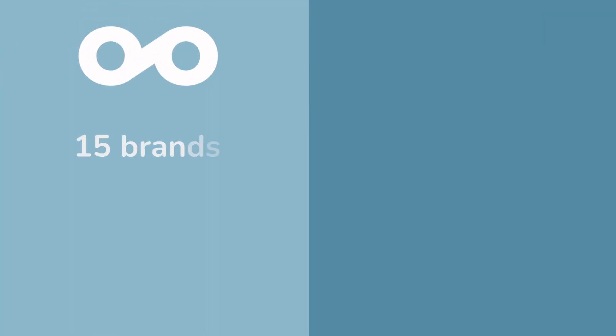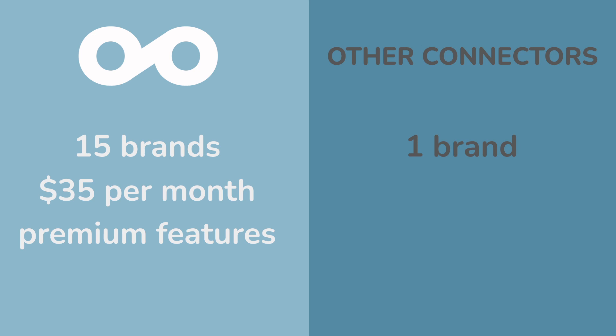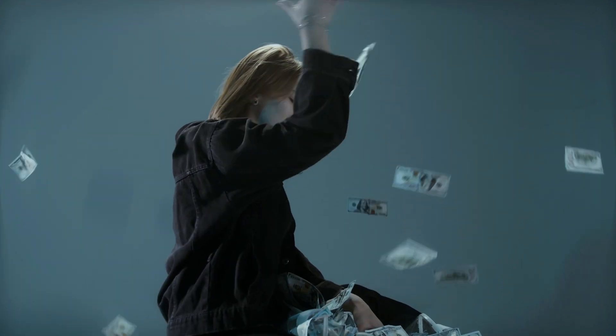Look at the simple comparison. With Metricool, 15 brands with their social profiles associated for $35 per month — and in addition to the connector, you have access to all the premium features. With other connectors, one brand and one social profile costs $50. If you start adding up networks, you can end up paying a lot of money every month.